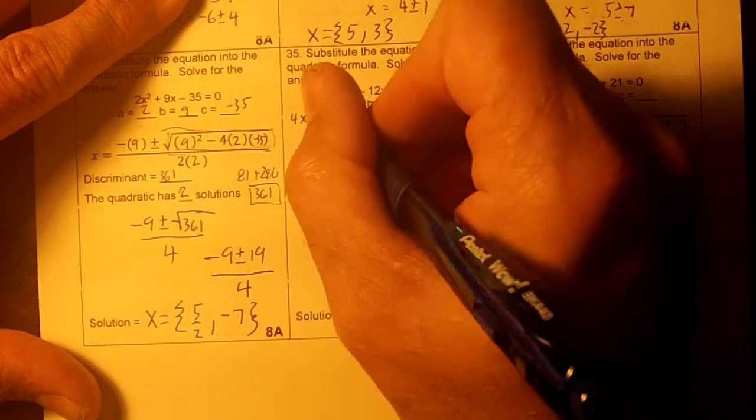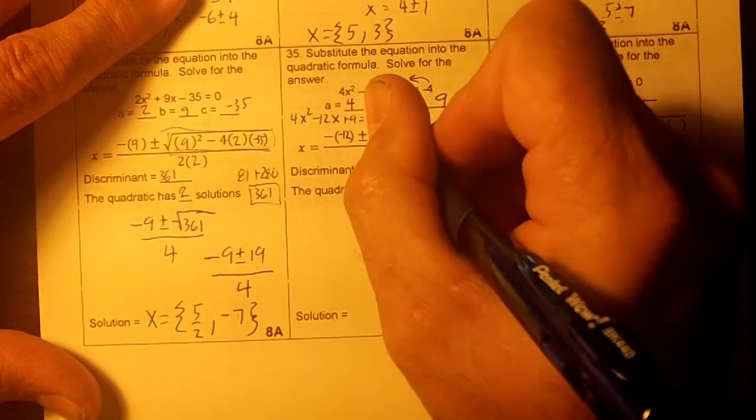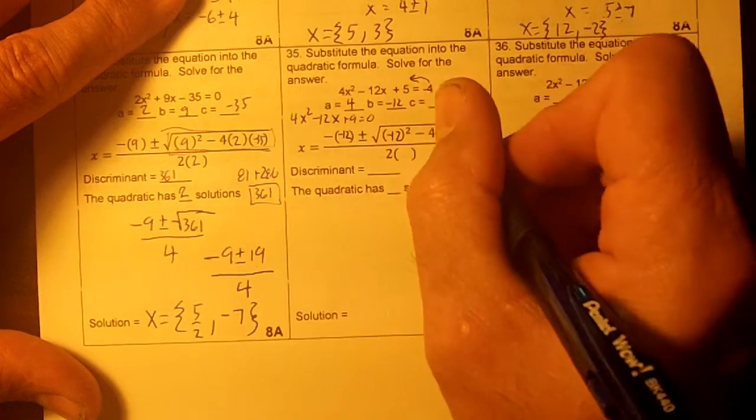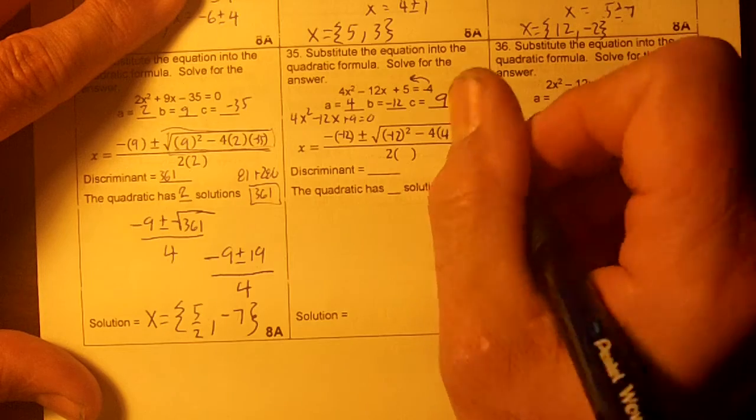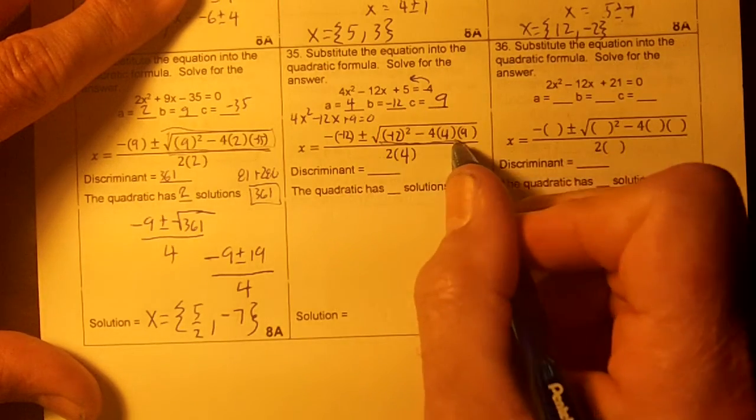Now then we're going to plug in. The negative 12 goes here. And then we're going to use the negative 12 again right here. And then 4AC, so this will be 4 and 9, and then 2 times 4 right here. The first thing you want to do is calculate this.